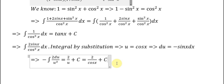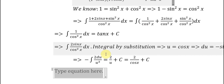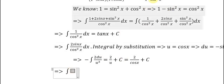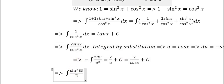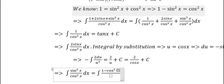The next part is sin²s / cos²s. We know sin s / cos s = tan s. We convert sin²s using 1 - cos²s, giving (1 - cos²s) / cos²s.